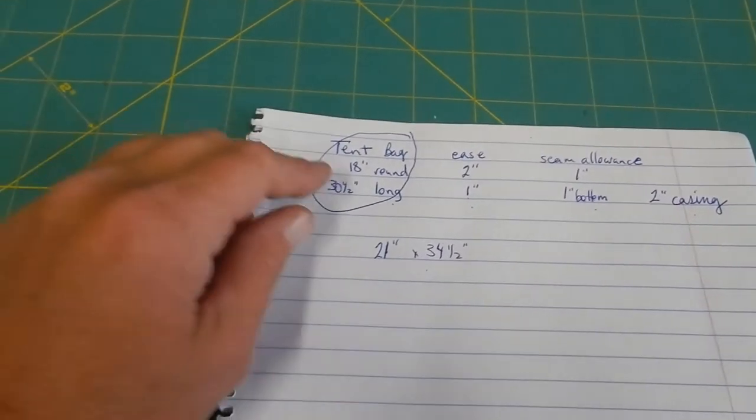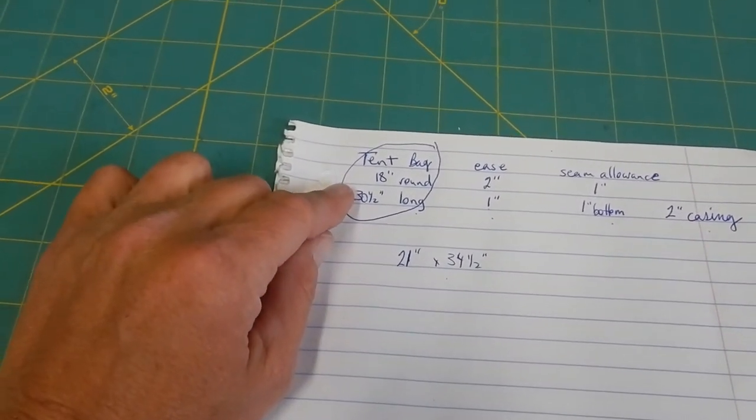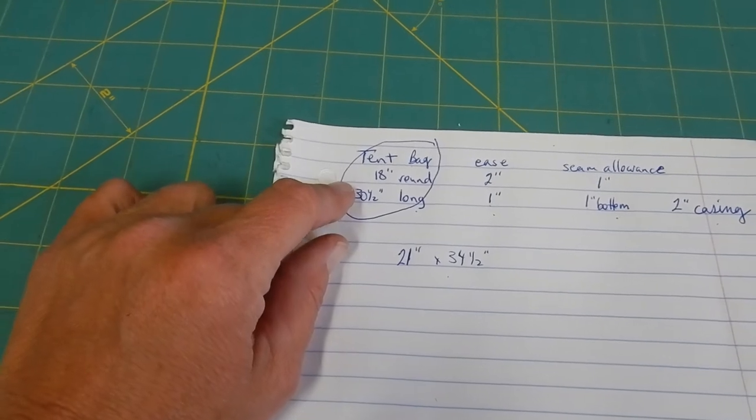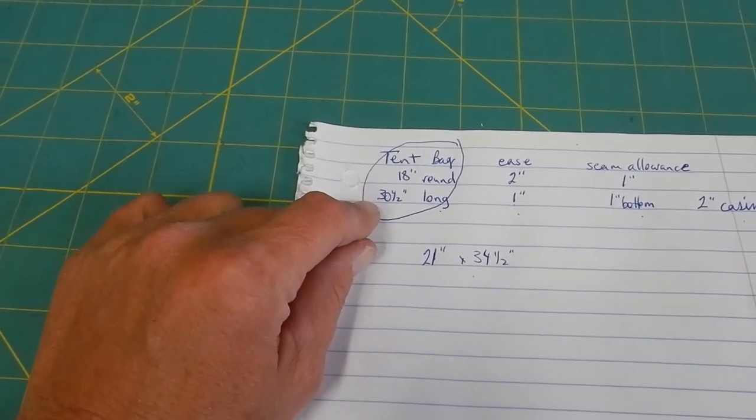Okay, I've taken measurements of my tent when it's all packed up ready to go in the bag. It's 18 inches around and 30 and a half inches long.